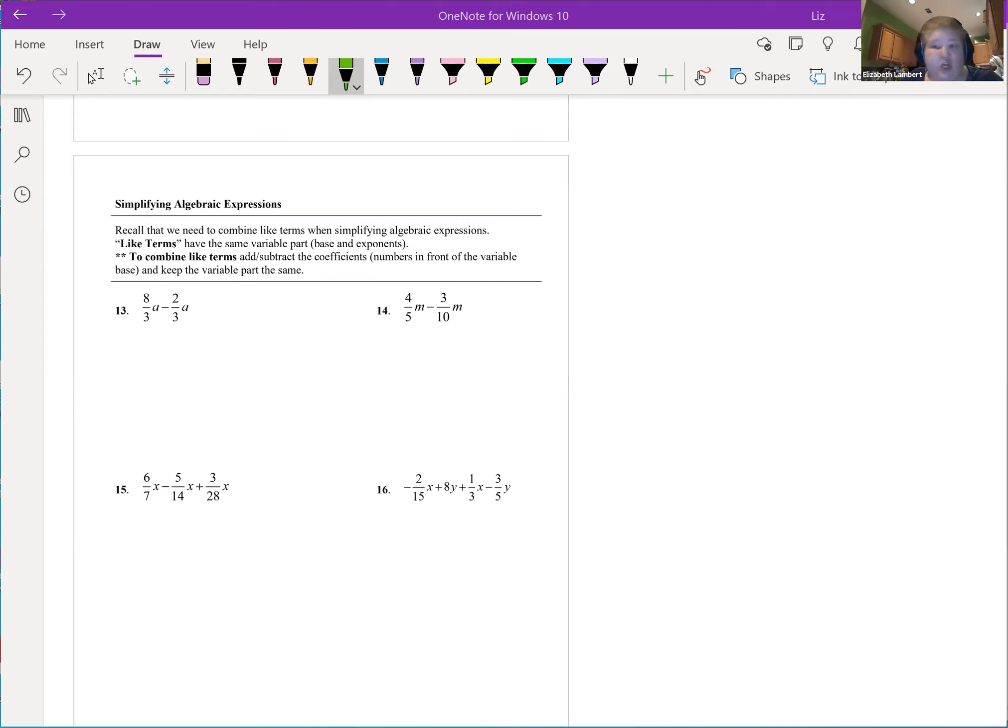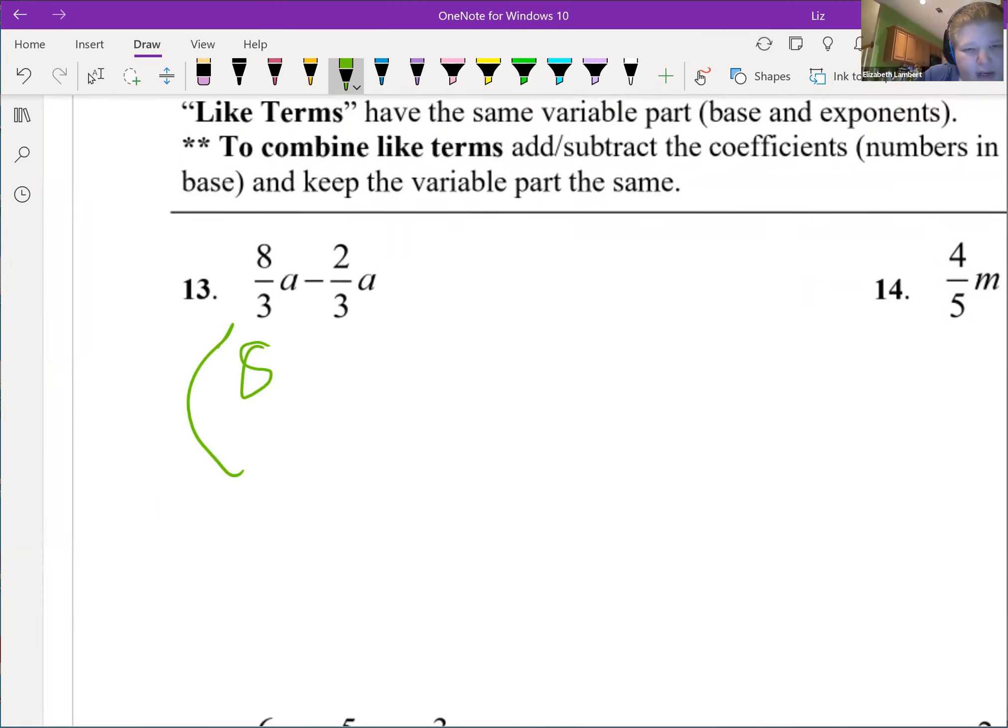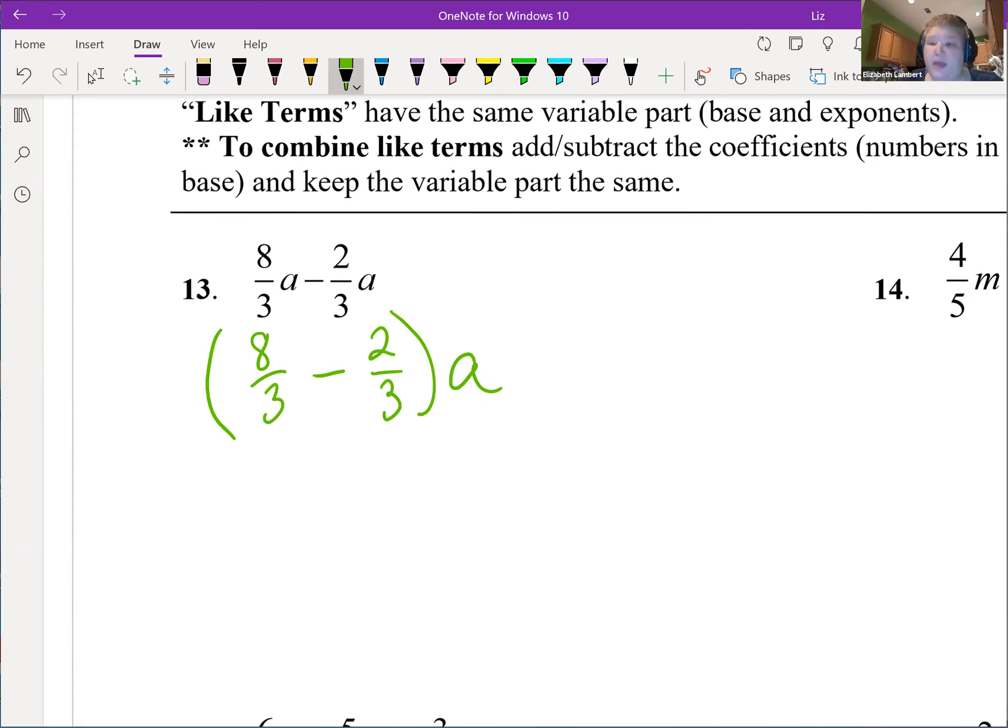The kind of behind the scenes what's actually happening: both of these terms have an a, so what we do is we factor the a out. We can factor, pull out the common things and write them on the right or the left because our multiplication is the same either way.